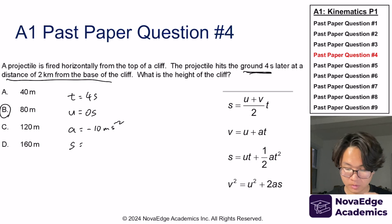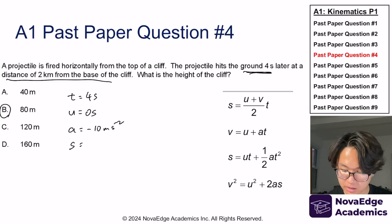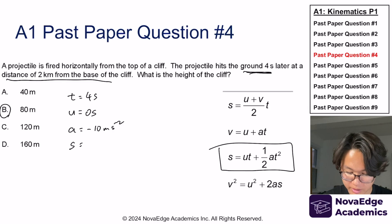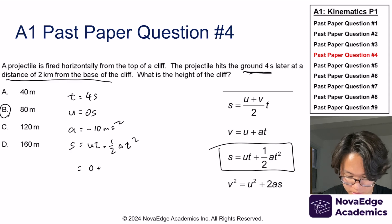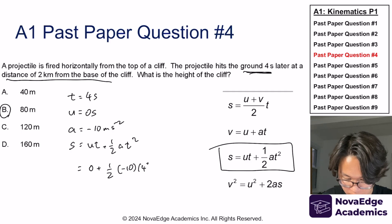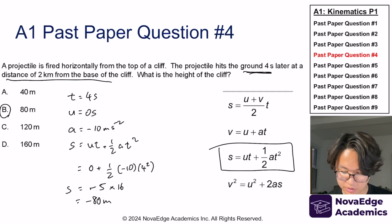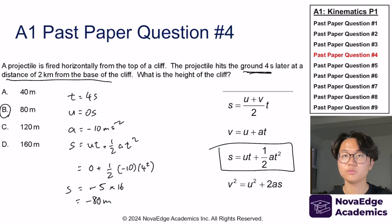We can solve for the displacement using s equals ut plus one-half at squared, which gives 0 plus one-half times negative 10 times 4 squared. The displacement is negative 80 meters, which means the height is just 80 meters.